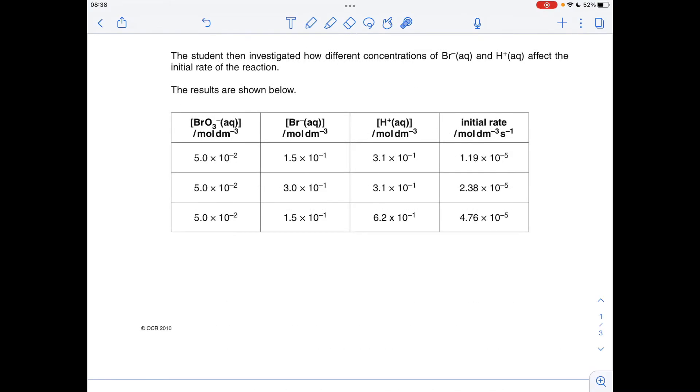And then if we use rows one and three, you can see Br minus ion concentration is constant, H plus concentration has doubled, but the initial rate has quadrupled. So it must be second order with respect to the H plus ion.